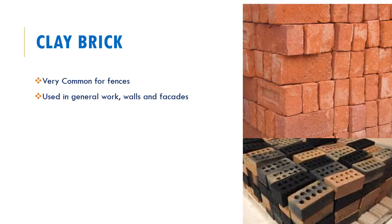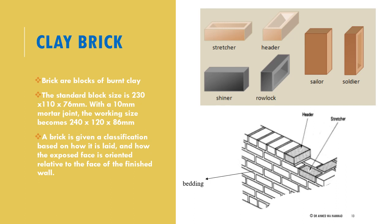Starting off with clay bricks — it's probably the most common material used for masonry. Generally speaking, it's used for lighter works: structures where you don't need them to support massive loads. So for example, non-load-bearing walls, fences, and exterior facades sometimes. The brick itself can come in various sizes, but the standard block size is 230 mm by 110 mm and the height is 76 mm.